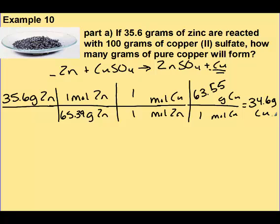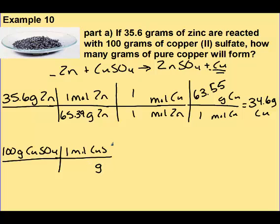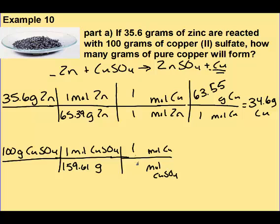So 34.6 grams of copper, but I'm not sure if that is my limiting reactant, so I also have to do the same thing with my 100 grams of copper sulfate. Now I'm going to convert my copper sulfate to grams of copper. Both products have to be in the same unit so we can compare them. So I convert it to moles, then my mole-to-mole ratio — still one to one.